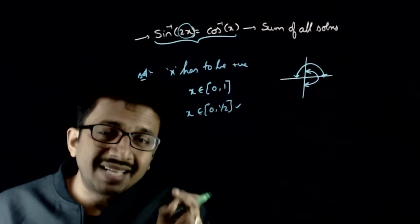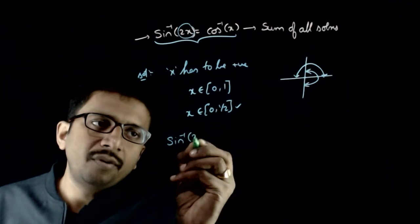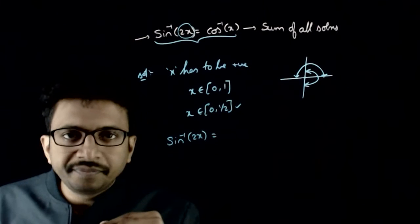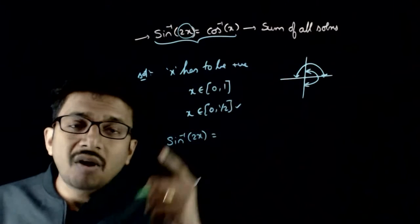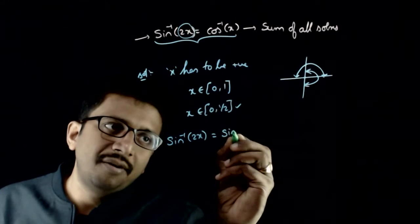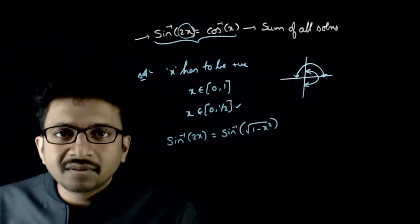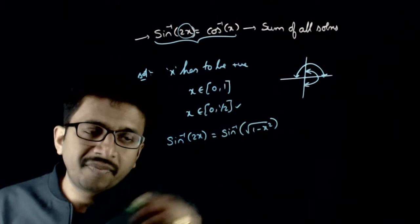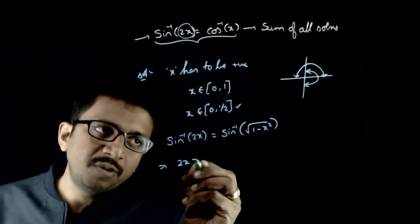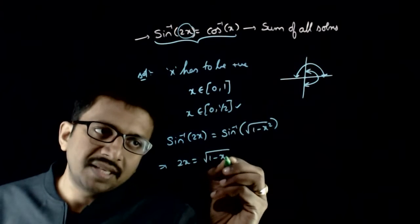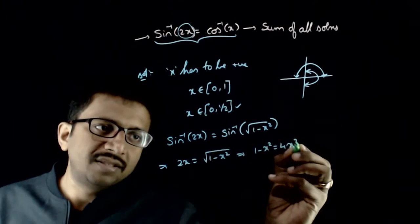Now let us find exactly what the roots are. Sine inverse of 2x equals cos inverse of x. We convert cos inverse x into sine inverse form: that is, sine inverse of root of 1 minus x squared. This means sine inverse of something equals sine inverse of something, so 2x must equal root of 1 minus x squared.